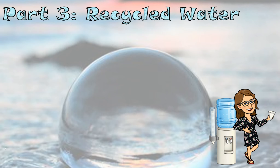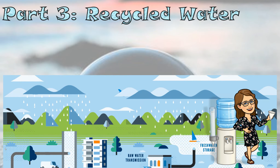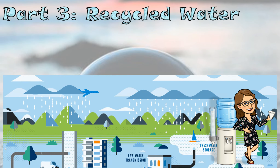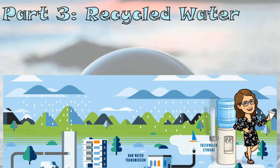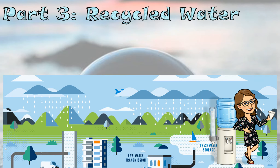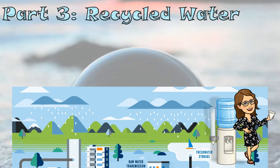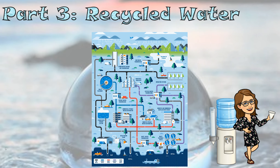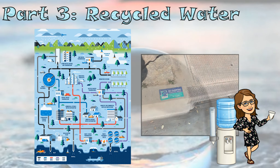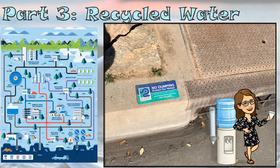Let's move on to part three: recycled water. The little water cycle we just looked at was very, very simple — we've got some rain, some surface water, and some plants. But once you get humans involved on the scene, this water cycle gets way more complicated. This is a much more complete version of the water cycle once humans show up on the scene.